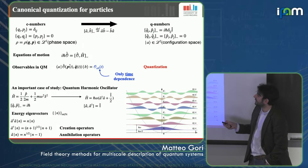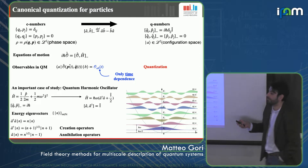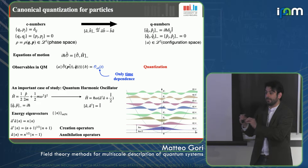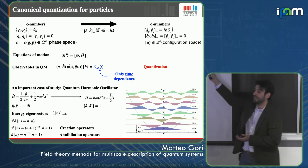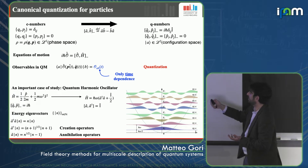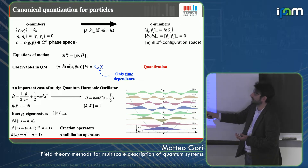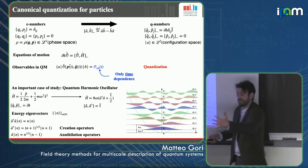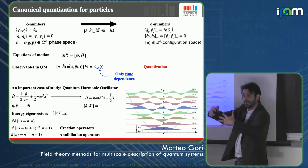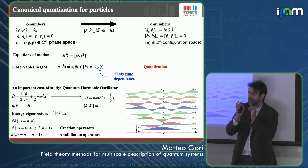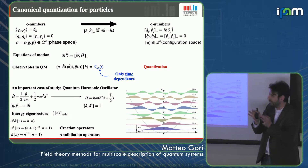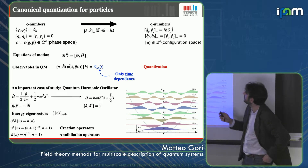Quantization means promoting Poisson brackets to commutators between operators, following the procedure introduced by Dirac. Positions and momenta go from numbers to operators, evaluated on a vector space representing the quantum state of the system. This is the Heisenberg picture — operators evolve through the Hamiltonian operator. We promote all quantities depending on p and q to operators; the mathematical details of this operation are delicate, so I suggest following textbooks carefully.